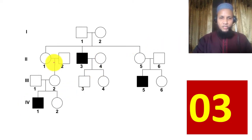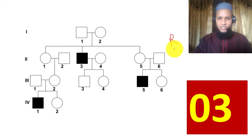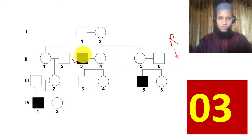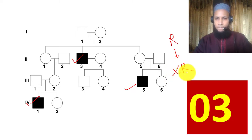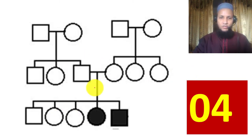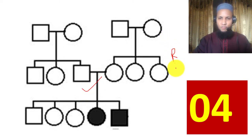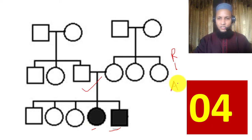Example 3: There is skipping of generation, so it is recessive. There is also sex biasness — only males are affected. Therefore this is X-linked recessive. Example 4: There is also skipping of generation, so it is recessive. However, both males and females are affected, so this is likely autosomal recessive.